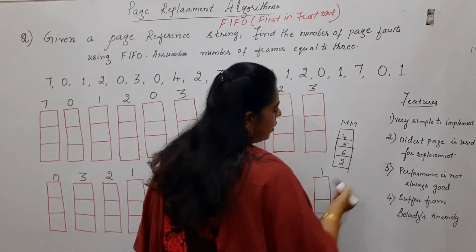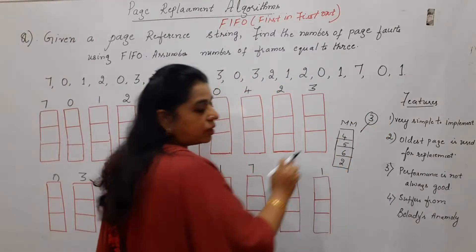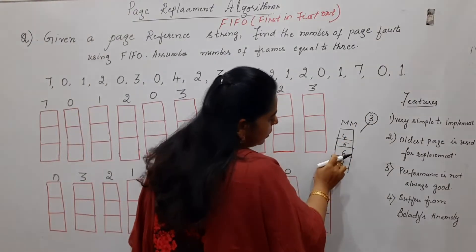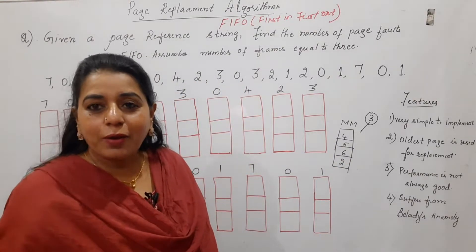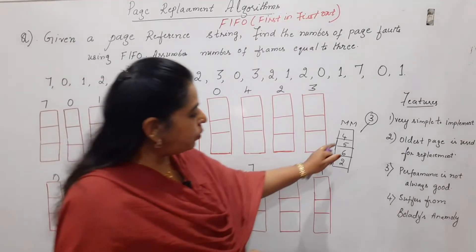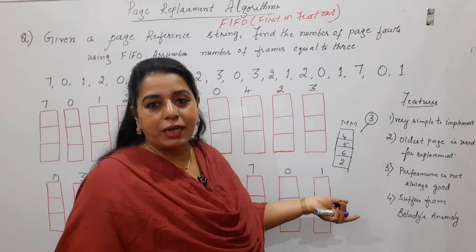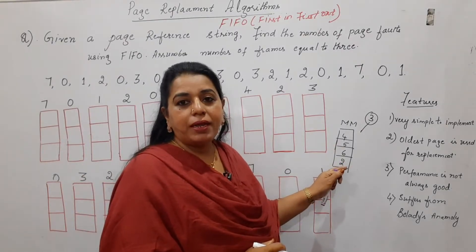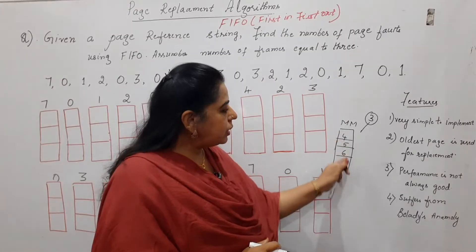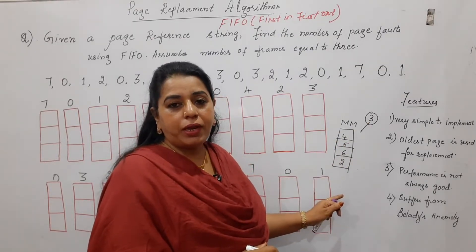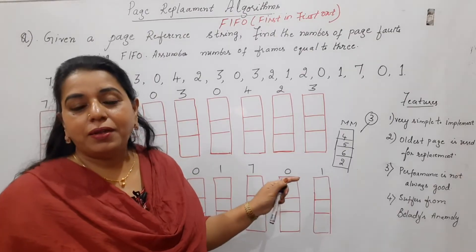Suppose a CPU wants to access page 3 of the main memory, but page 3 is not present. To accommodate page 3, one out of these four pages has to be removed. Now, which page has to be removed? That is what the algorithm decides — which logic you want to use in order to remove one particular page out of these four pages. We assume four frames here to understand the concept, all already filled with pages, but the CPU wants page 3 which is not present, so one page must be removed.